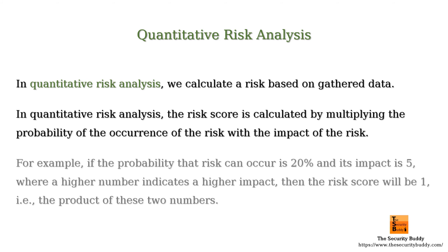For example, if the probability that a risk can occur is 20% and its impact is 5, where a higher number indicates a higher impact, then the risk score will be 1 — the product of these two numbers.